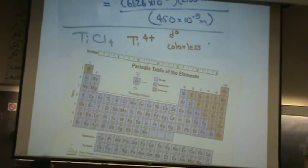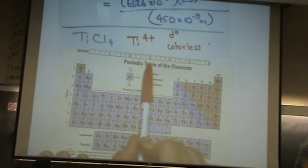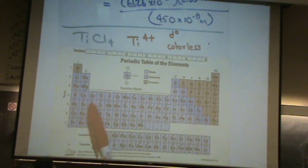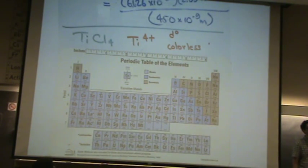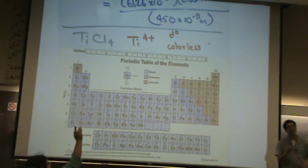Student question about D configurations in between zero and ten: D0 or D10 is always colorless. The ones in the middle — D1 through D9 — are not colorless usually. So I specifically gave you a question I knew would be colorless. The two types of questions are either this colorless case or the color wheel comparison case.